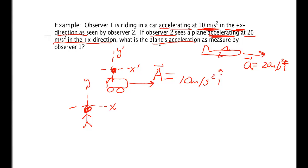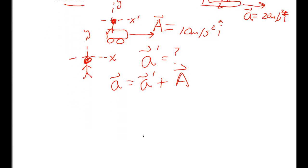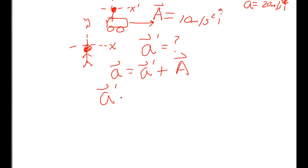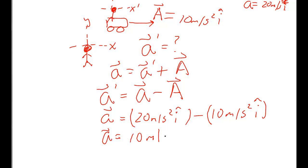It asks me what is the plane's acceleration as measured by Observer 1. So you want to know what A prime is. Let's write our formula. A is A prime plus capital A. I want to find this. So I need to isolate that term. A prime is the acceleration as measured by the unprimed observer minus the acceleration of the car as seen by the unprimed observer. So we have 20 meters per second squared i hat minus 10 meters per second squared i hat. So the acceleration is 10 meters per second squared i hat.